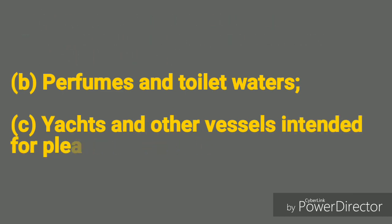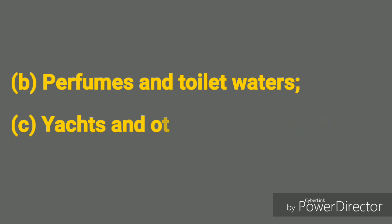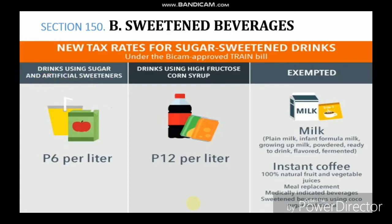Let's move to sweetened beverages. The new tax rates for sugar-sweetened drinks are: 6 pesos per liter on drinks using sugar and artificial sweeteners, and 12 pesos per liter on drinks using high fructose corn syrup. Examples of this include soft drinks.